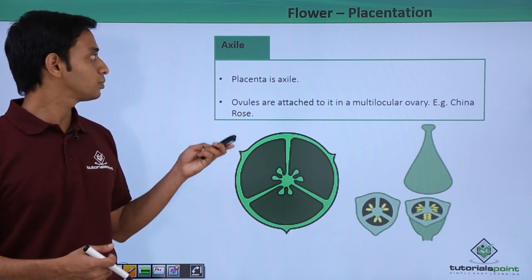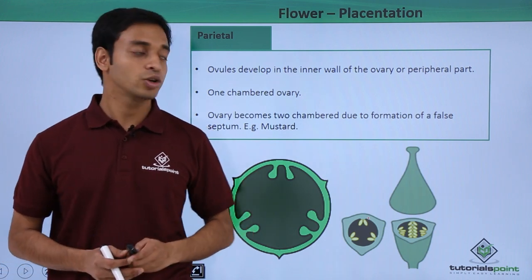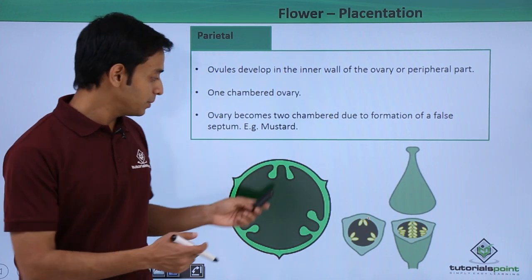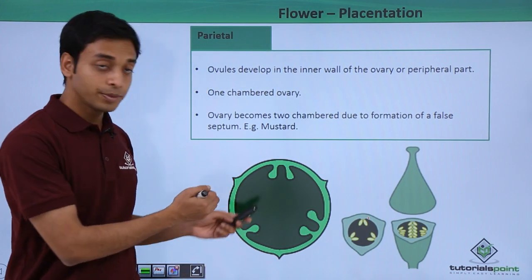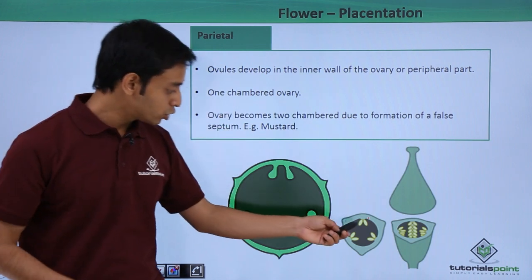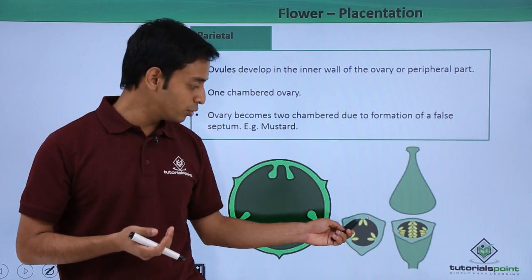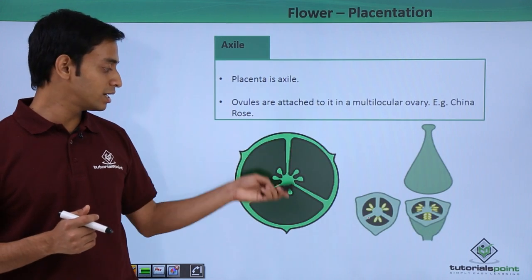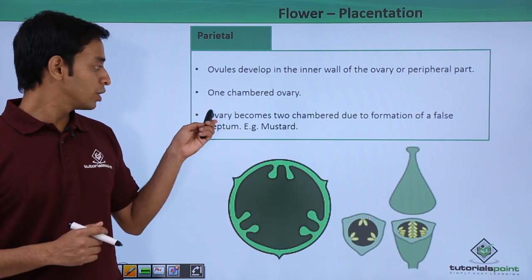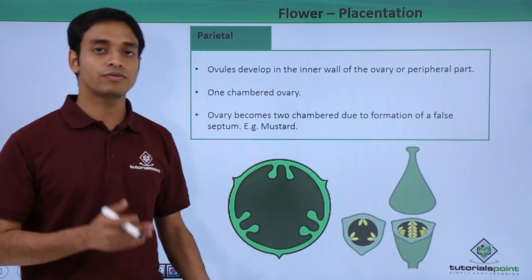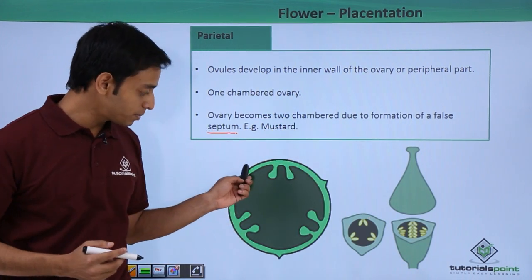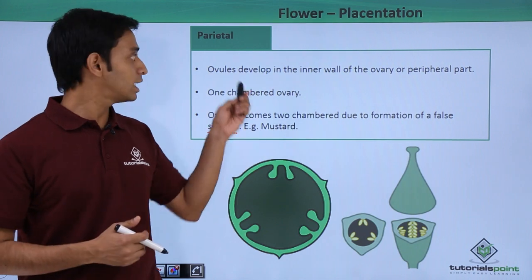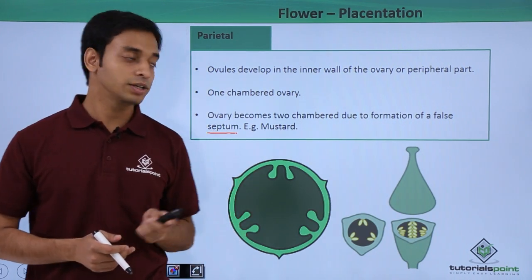The next type is parietal placentation. Here the ovules develop on the inner wall or peripheral part of the ovary. It is a single-chambered ovary, unlike the multi-chambered axile type. However, the ovary can become two-chambered if a false septum forms between the chambers. A good example of parietal placentation is mustard.